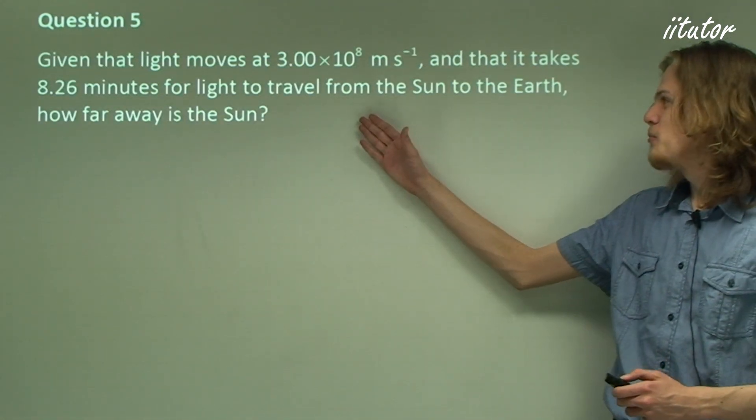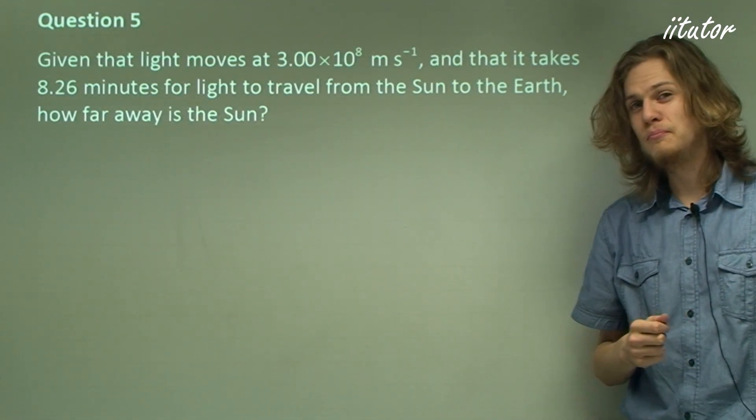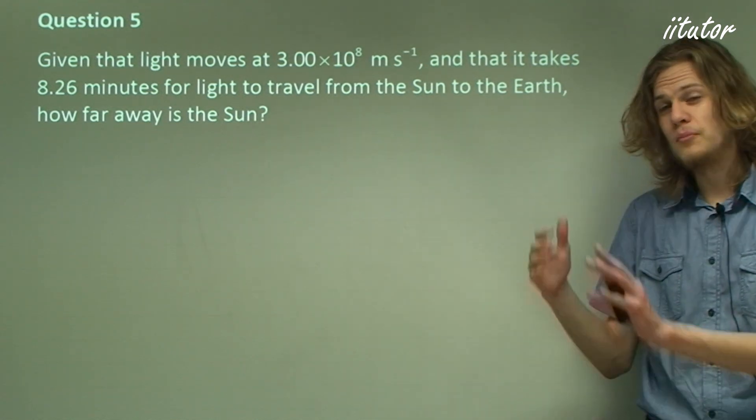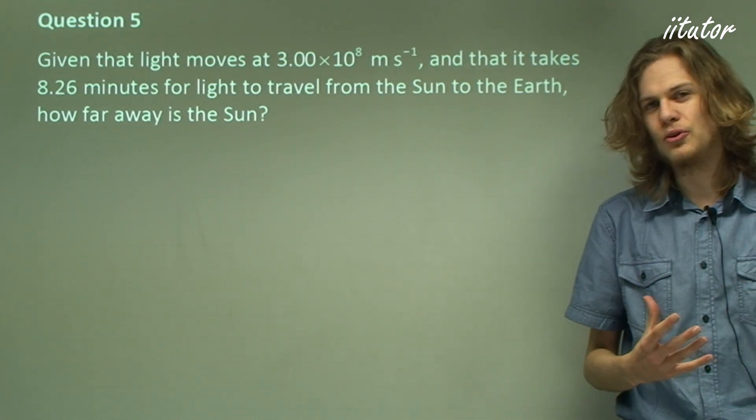Question five, given that light moves at this speed, 300 million meters per second, and that it takes 8.26 minutes for light from the Sun to reach Earth, calculate the distance between the two.